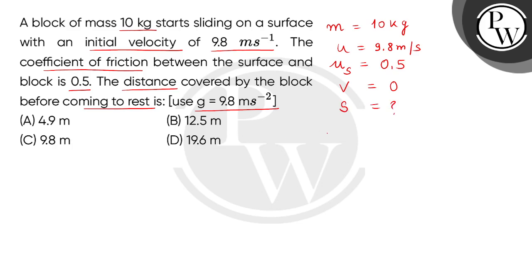First of all, we will use equation of motion. That is the third equation of motion: V squared equals U squared plus 2AS.